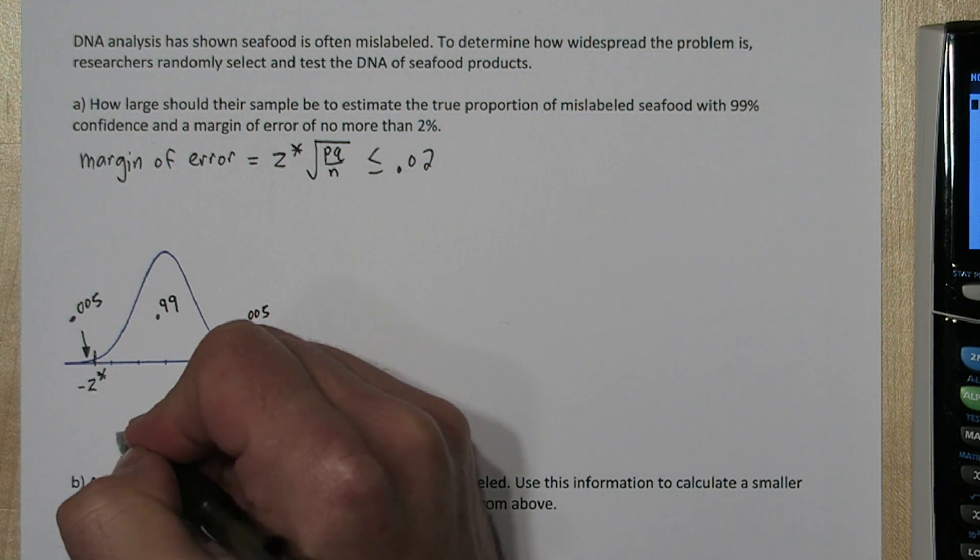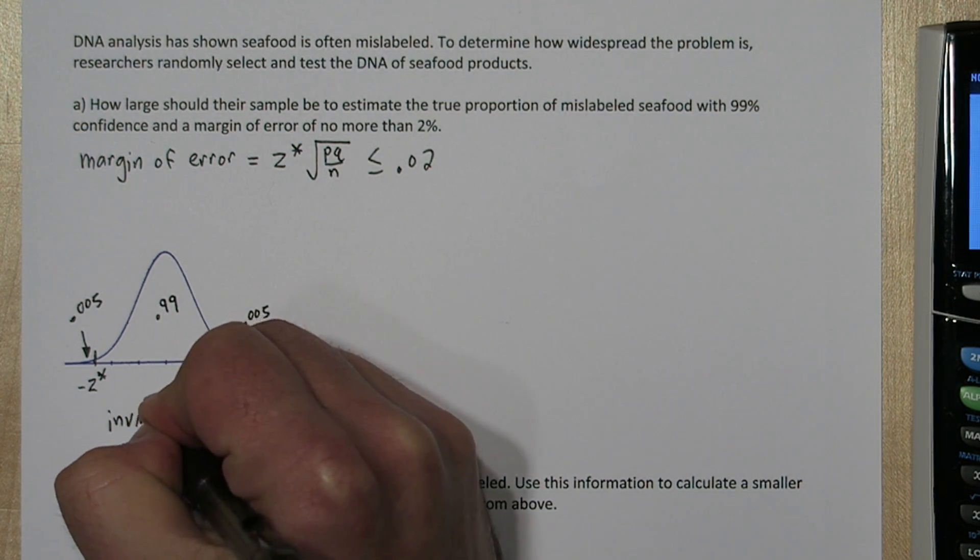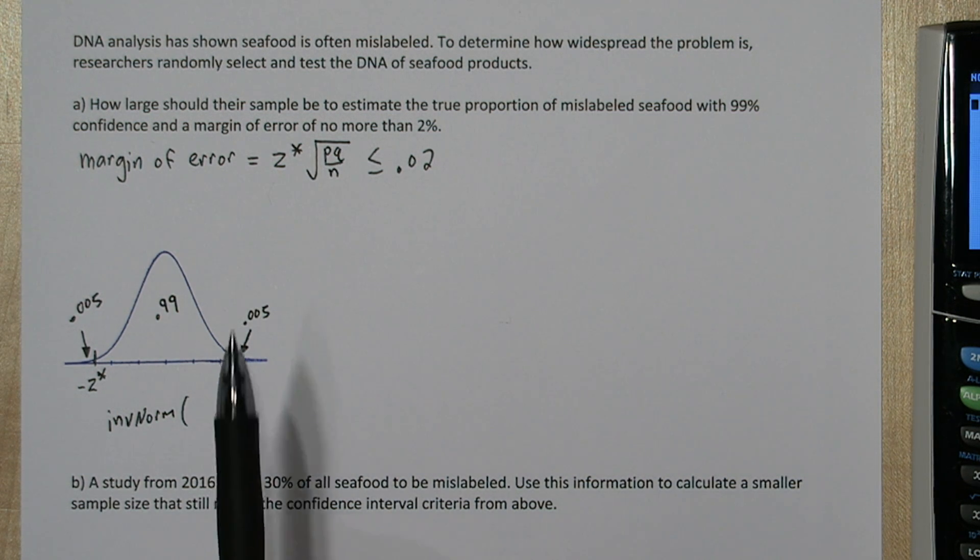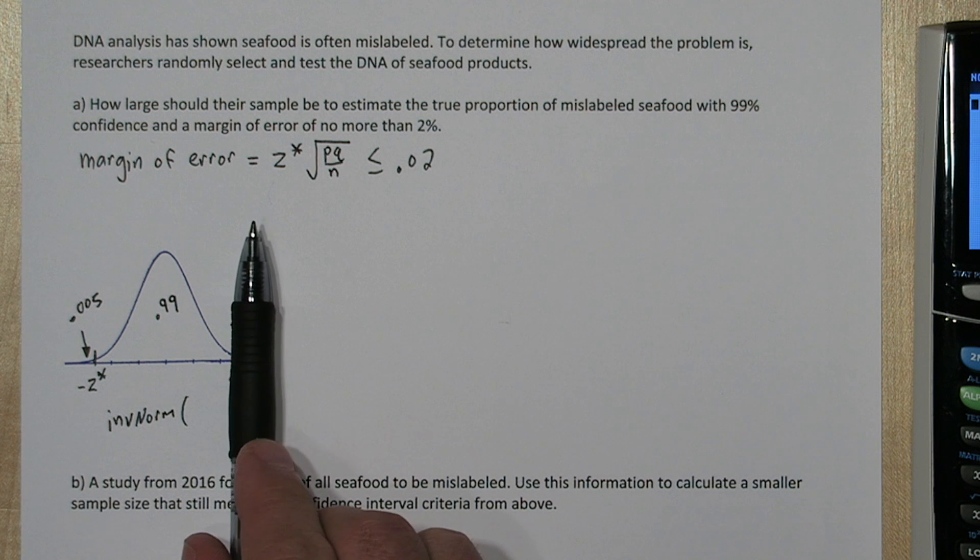So we're going to use this function inverse norm on the calculator. The way inverse norm works is you have to tell it how much area to the left do you want to cut off. So let's find this critical value, z star.